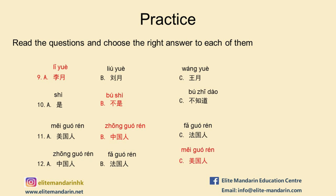The last sentence is 我叫马丁,我是美国人,我是学生, which means my name is Martin, I am an American, and I am a student. The question is 马丁是哪国人? meaning what's Martin's nationality? The right answer is C, 美国人。